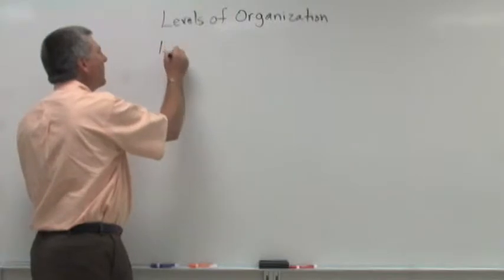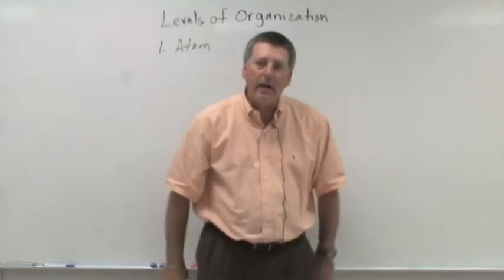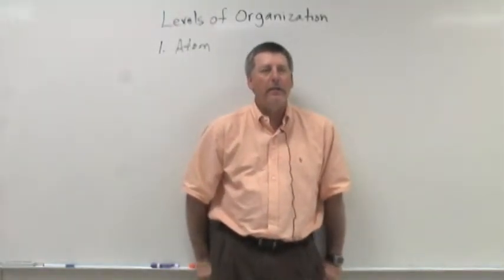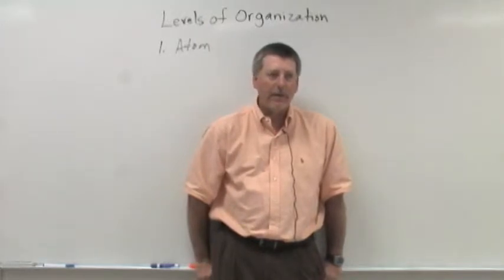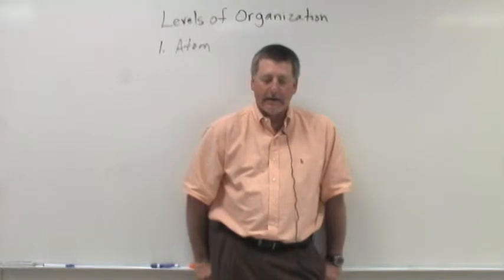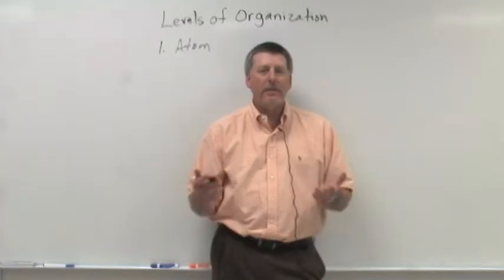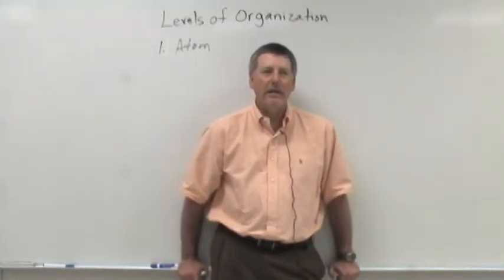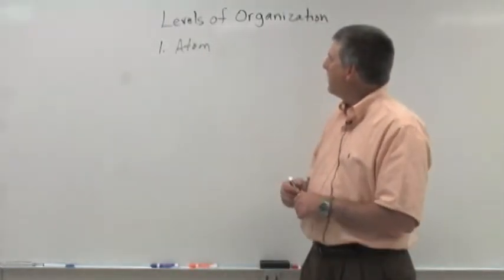So we start off with what we call the atom, and certainly if you've had a chemistry class or a physical science class in high school you know about the atom hopefully. The atom is the smallest complete unit of matter. Now it's important to understand what we mean by the smallest complete unit of matter. There are things that are smaller than atoms. We have subatomic particles such as protons and neutrons and electrons and mesons and bosons. But these subatomic particles by themselves do not represent any complete piece of matter. So the atom is the smallest complete unit of matter.